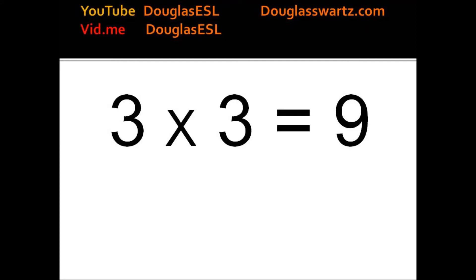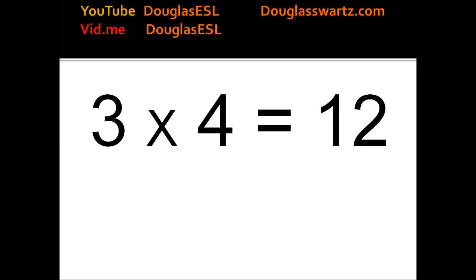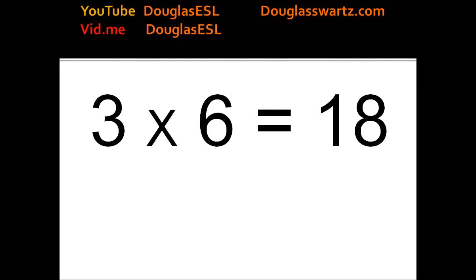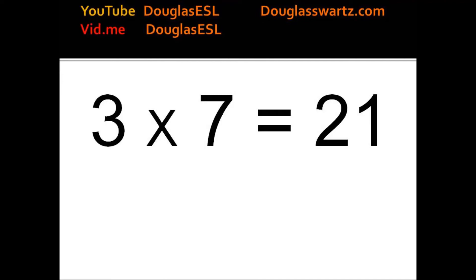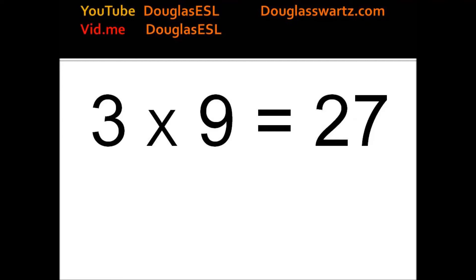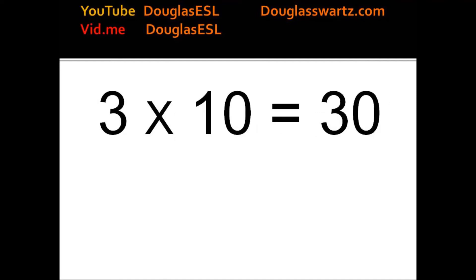3 times 3 equals 9. 3 times 4 equals 12. 3 times 5 equals 15. 3 times 6 equals 18. 3 times 7 equals 21. 3 times 8 equals 24. 3 times 9 equals 27. 3 times 10 equals 30.